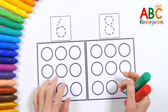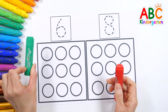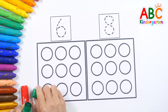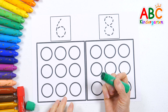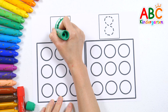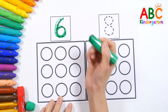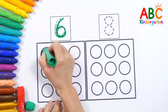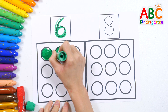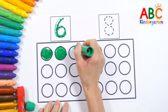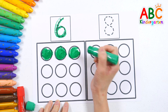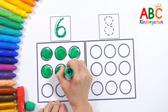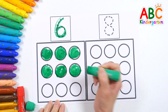We have two numbers here. Let's write each number with crayons and color circles to compare their size. 6 — let's color 6 circles. 1, 2, 3, 4, 5, 6.